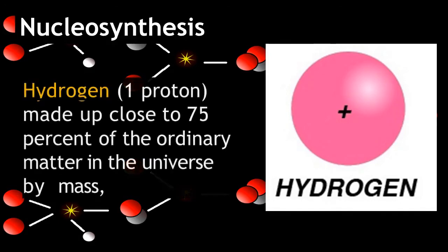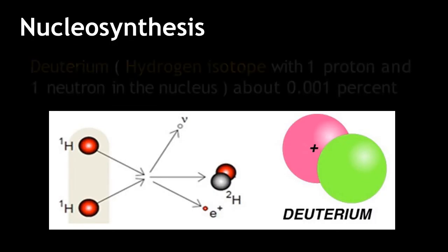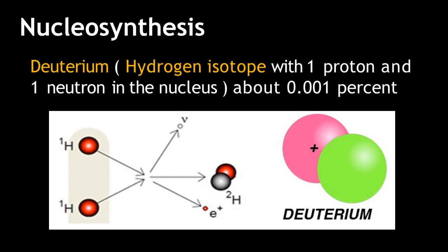Hydrogen, a one-proton element, made up close to 75% of the ordinary matter in the universe by mass. Deuterium, a hydrogen isotope with one proton and one neutron in the nucleus, makes about 0.001%.